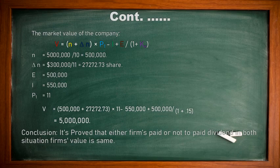So it is proved that whether you are paying dividend or not paying dividend, it does not affect the company's value — the company's value remains the same at $5 million. This is the point Mr. MM brought to us: they said that dividend is irrelevant and it's not going to affect the company's value. In conclusion, it is proved that in both situations, the firm's value is the same. Mr. MM confidently showed that the value of the company is not going to be affected by the dividend decision.